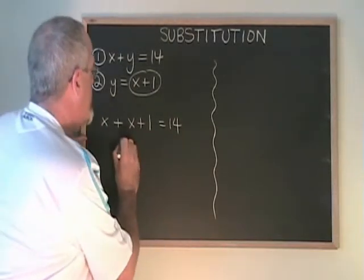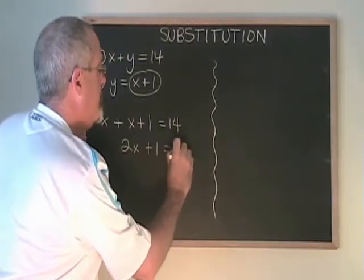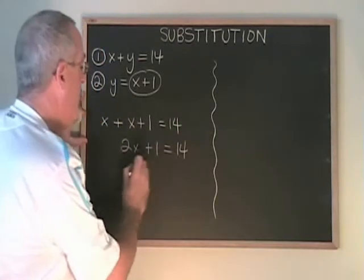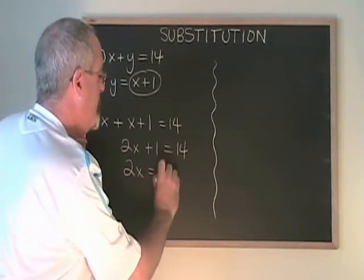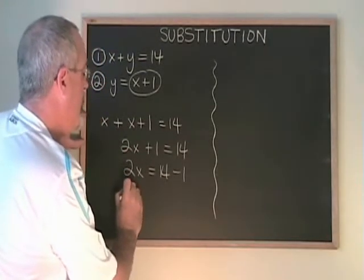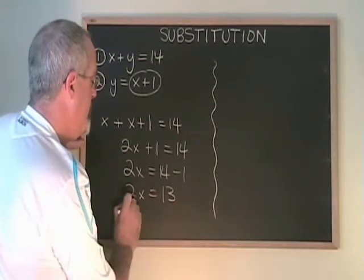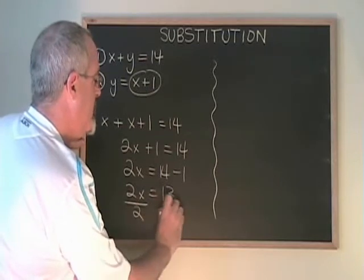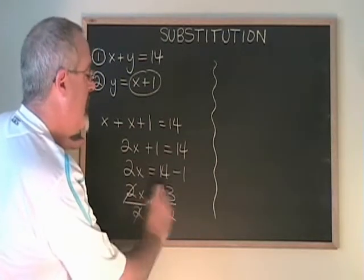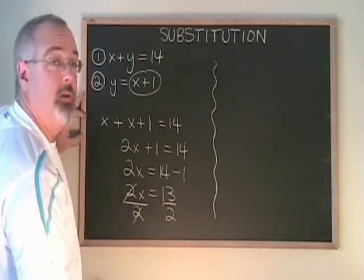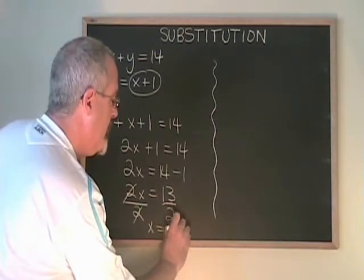x plus x is 2x. Now let's move the 1 to the other side. 14 minus 1 is 13. If we divide both sides by 2, we have isolated our x, and we see x is equal to 13 halves, or x is equal to 6.5.